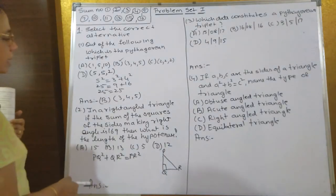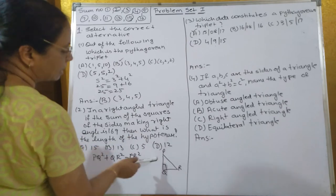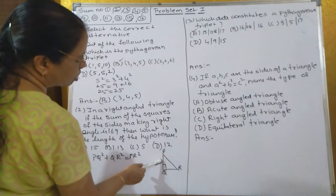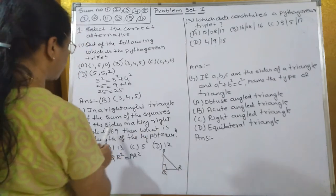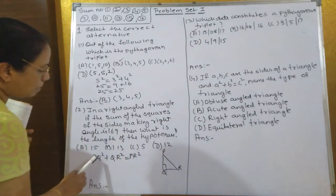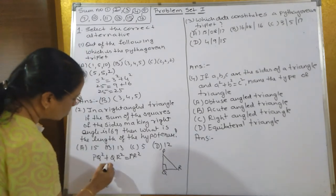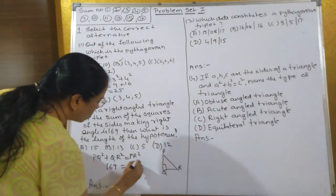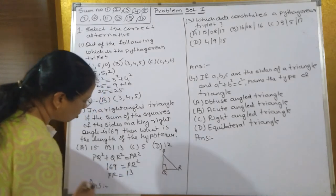Now in a right angle triangle, if the sum of the squares of the two sides making the right angle - that means PQ and QR are making the right angle - so the sum of PQ² and QR² is equal to 169. Then what is the length of the hypotenuse? By Pythagorean theorem, PQ² + QR² = PR². PQ² + QR² is already given as 169 = PR². Therefore PR equals the root of 169, which is 13.